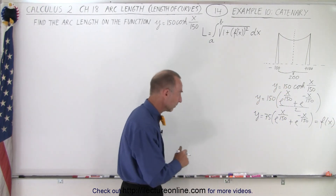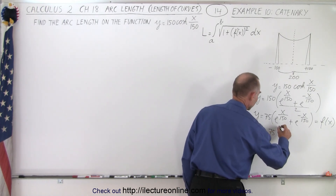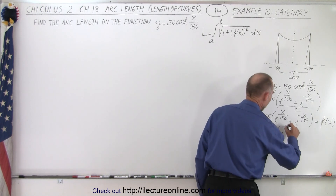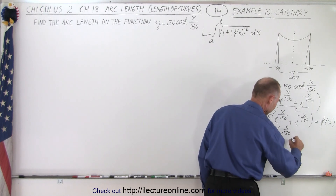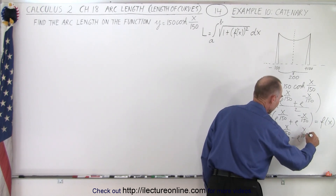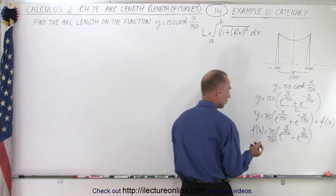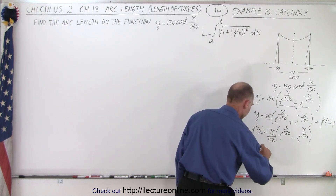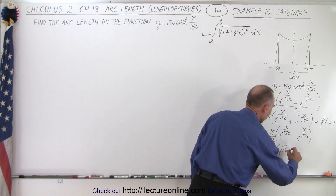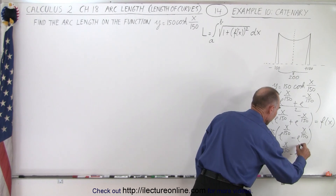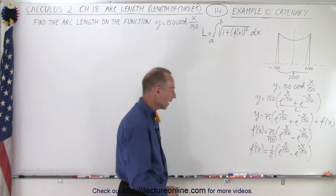Now we take the derivative. f prime of x equals 75 times e to the x over 150 times the derivative of the exponent, which is 1 over 150. So f prime of x can be written as one half times the quantity e to the x over 150 minus e to the minus x over 150.